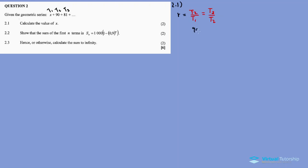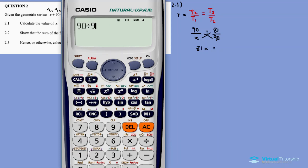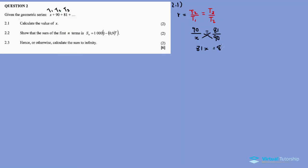So t2 is 90 divided by t1 which is x, and then t3 is 81 and t2 is 90. I cross multiply and solve for x. X times 81 equals 81x equals 90 times 90. 90 times 90 is 8100. Divide both sides by 81. X is equal to 8100 divided by 81, which is 100. So x equals 100.